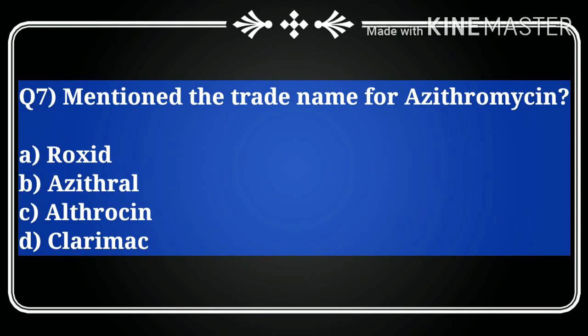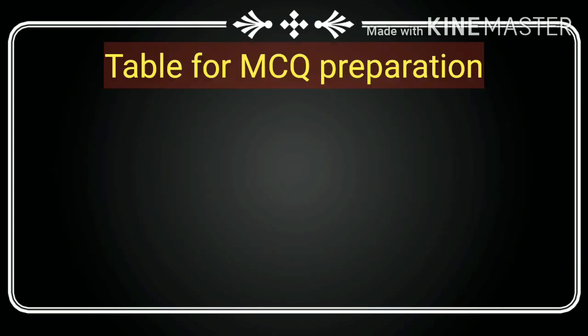Question number seven: what is the trade name for azithromycin? Options are: A) Roxid, B) Azithral, C) Ultracine, D) Clarimac. These are different brand names in the options. Our correct answer is B, Azithral. Azithral is the trade name for azithromycin, so keep this brand name in mind.